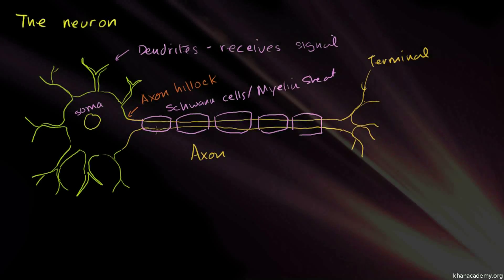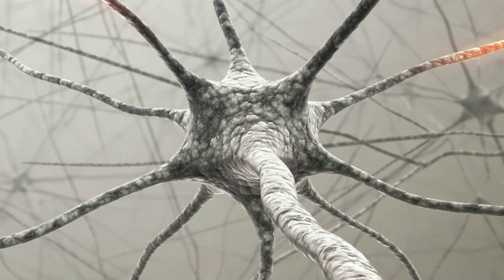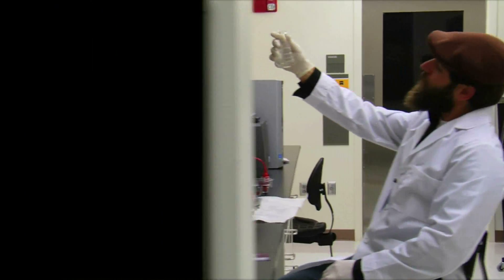Brain neurons are not naturally light sensitive. So to find a way to control neurons with light, scientists had to draw on research about two light sensitive organisms.